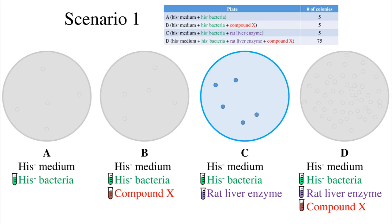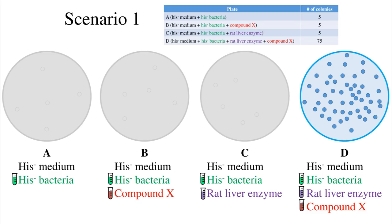The rat liver homogenate, or rat liver enzyme, is used to simulate the human liver enzyme. On plate D, the 75 colonies seen in the presence of rat liver enzymes plus the compound indicates that after the compound is metabolized by liver enzymes, a metabolite is formed that does have mutagenic properties. The rate of reverse mutation is much greater when the compound is metabolized. These results indicate that the compound is pro-mutagenic — the parent form is non-mutagenic, but once metabolized by the liver, it becomes activated and is mutagenic, causing a greater rate of reverse mutation compared to the spontaneous rate.